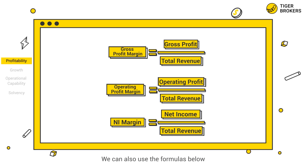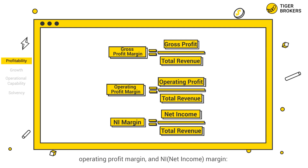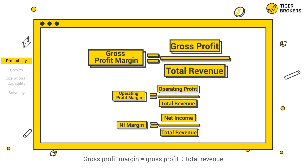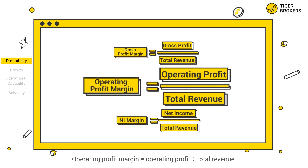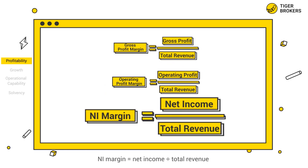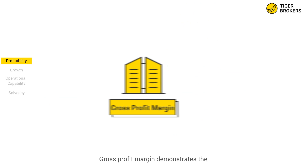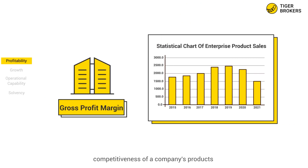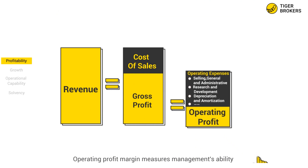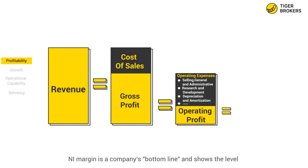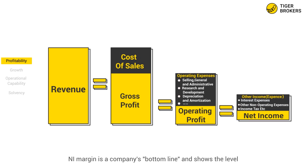We can also use the formulas below to quickly calculate gross profit margin, operating profit margin, and net income margin. Gross profit margin equals gross profit divided by total revenue. Operating profit margin equals operating profit divided by total revenue. Net income margin equals net income divided by total revenue. Gross profit margin demonstrates the competitiveness of a company's products. Operating profit margin measures management's ability to generate profits from its main business after subtracting costs from revenue. Net income margin is a company's bottom line and shows the level of profitability on a net basis.